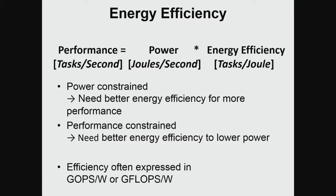The way to do that is by improving energy efficiency in both ways. In practice, we usually don't measure efficiency in tasks per joule, although it should be — we try to find a proxy to it. We usually end up with either gigaops per watt or gigaflops per watt, depending on whether the machine has a floating point unit or not.